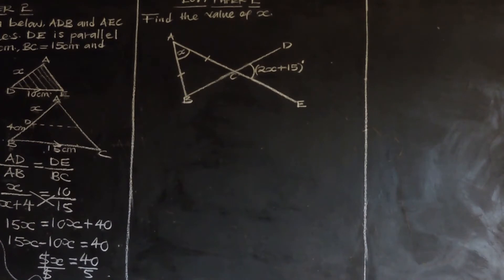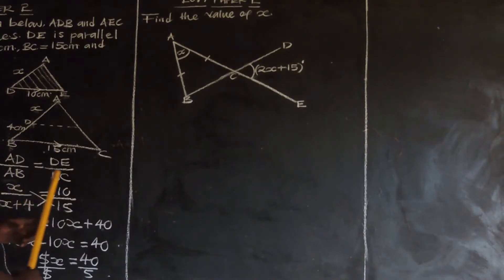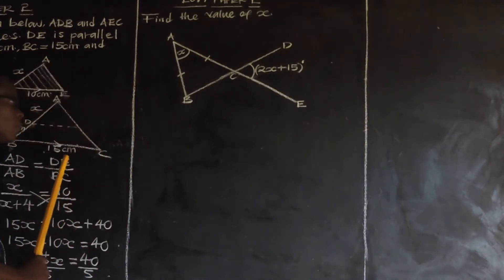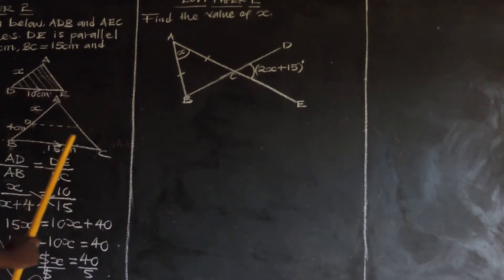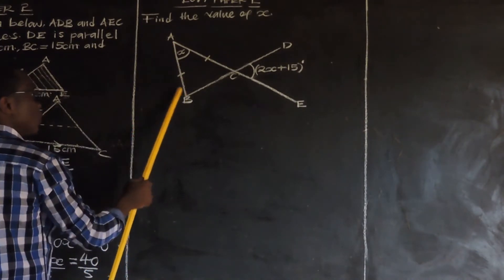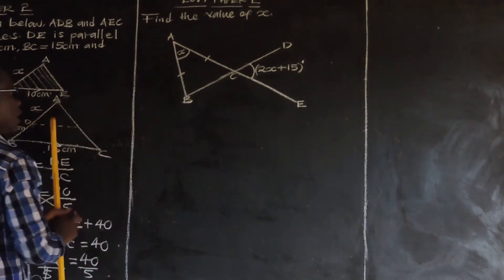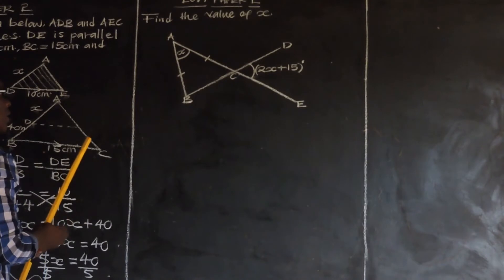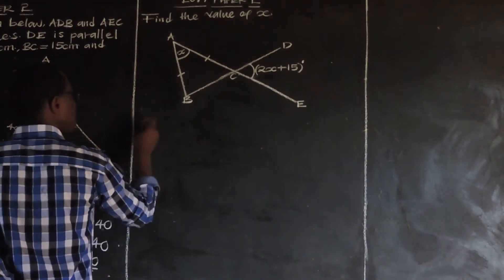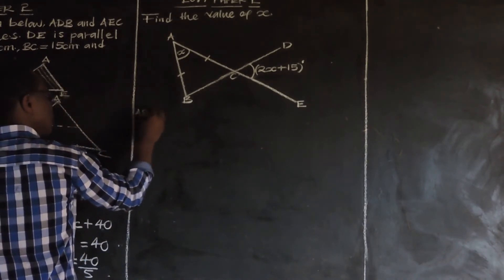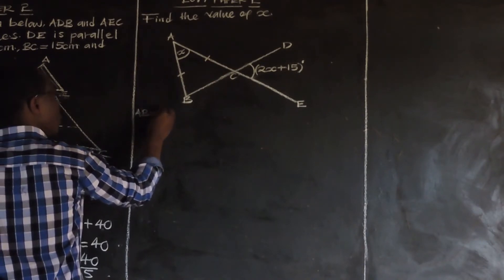Now what you need to do is look at the type of triangle we have been given. This type of triangle is called an isosceles triangle, because these two sides are equal — AB and AC. AB and AC, these two are equal.